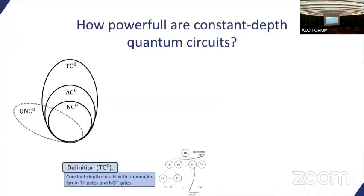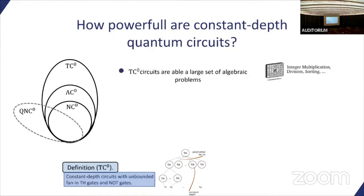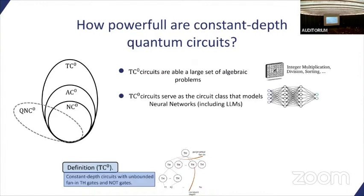The next interesting class we could look at is TC0, constant depth threshold circuits, where we have as a minimal element a threshold gate. This is a gate where we have activation of the gate to one at a certain Hamming weight. Then we have a circuit of unbounded fanin gates of this type. Why is this interesting? Because TC0 already can solve some interesting algebraic problems, like integer multiplication and sorting. It was actually motivated to define and describe neural networks as circuits. Some recent results have shown that large LLMs and even ChatGPT, these types of models, are captured by circuit classes like TC0.